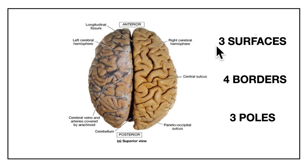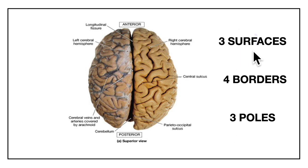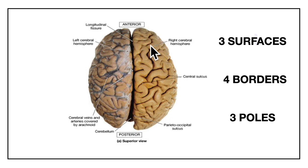Now we will be learning about the features of the cerebral hemispheres. Each hemisphere has three surfaces, four borders and three poles. Looking at the three surfaces of the cerebral hemisphere: firstly we have the supralateral surface. This is the supralateral surface of the right cerebral hemisphere, and this is the supralateral surface of the left cerebral hemisphere.